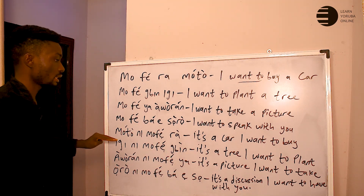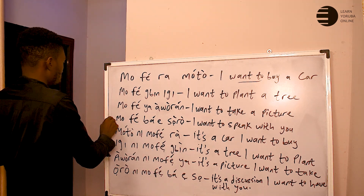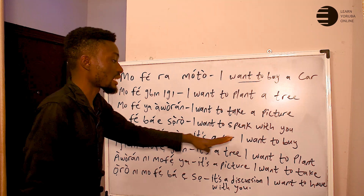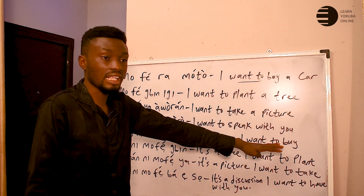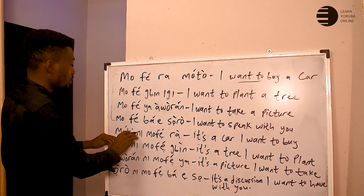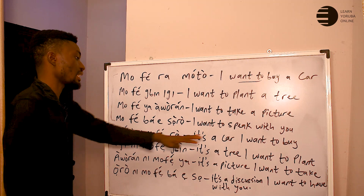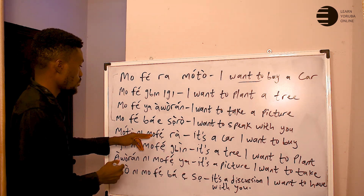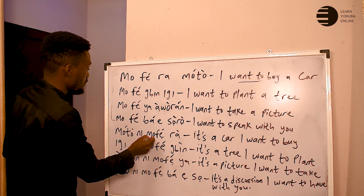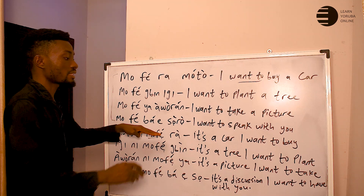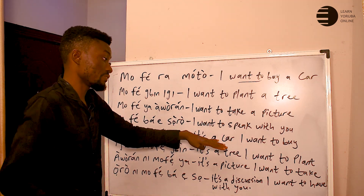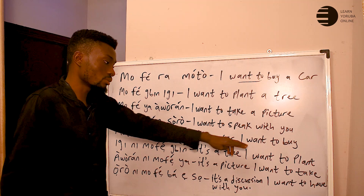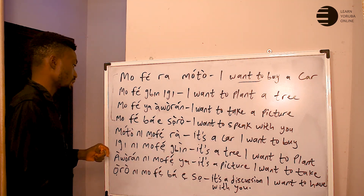Now we can turn these sentences around in the other direction. Instead of 'I want to buy a car,' you can say 'it's a car I want to buy' — maybe responding to someone. The structure becomes 'moto ni mofe ra' — 'moto ni' means 'it's a car,' then 'mofe ra' is 'I want to buy.' If it is 'it's a car we want to buy,' it becomes 'moto ni a fẹra.' If it is 'it's a car they want to buy,' it is 'moto ni wọn fẹra.'